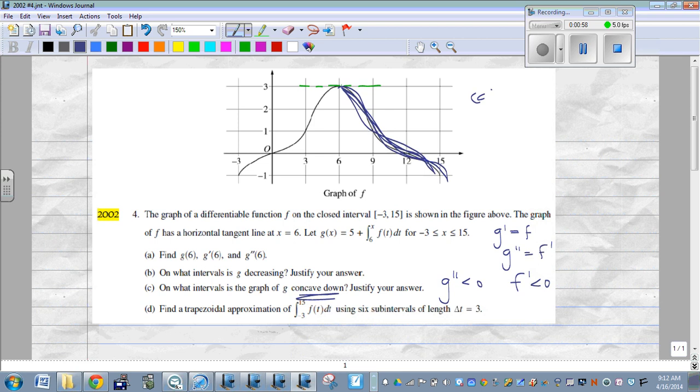So for part C, G is concave down from 6 to 15 because the second derivative of G is less than zero. And again, we kind of explain the second derivative of G is the same as the derivative of F. Those are both less than zero.